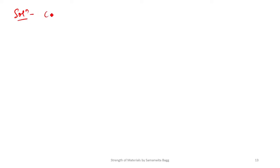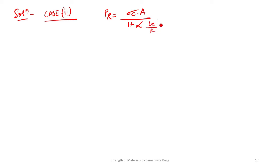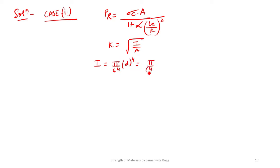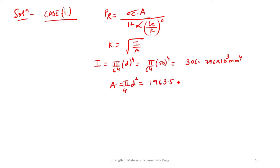For Case 1, using Rankine's formula: PR = sigma_c into A upon (1 + alpha into (LE/K)²). K is calculated as the root of I by A. I is calculated as (π/64) D⁴, which gives 306.796 into 10³ mm⁴. The area is (π/4) D², giving 1963.5 mm². Substituting into the K formula gives K = 12.5 mm.